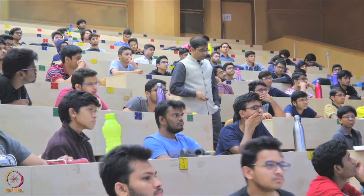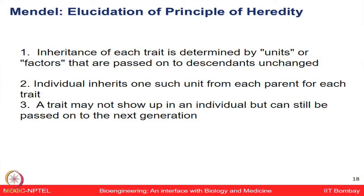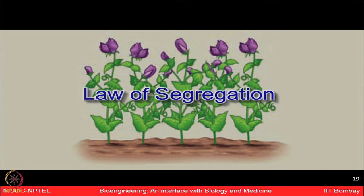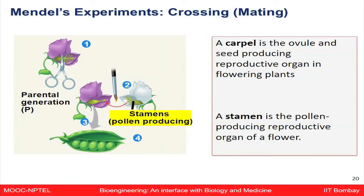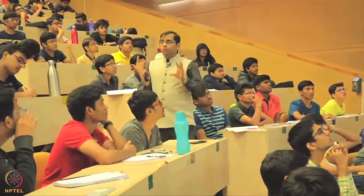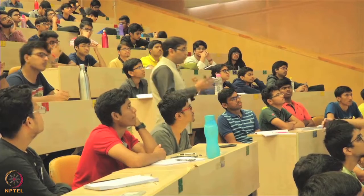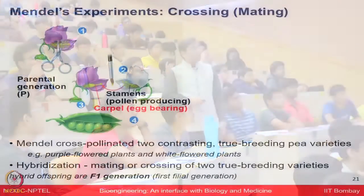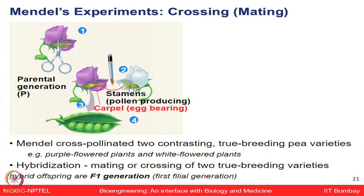These characteristic variants are called traits. To elucidate principles of hereditary, inheritance of each trait is determined by units or factors — now known as genes — which are passed to descendants unchanged. Individuals inherit one unit from each parent and transmit them to the next generation. This brings us to Mendel's first law: the law of segregation. The stamen is the male pollen-producing part, and the carpel is the female egg-bearing part of the flower.